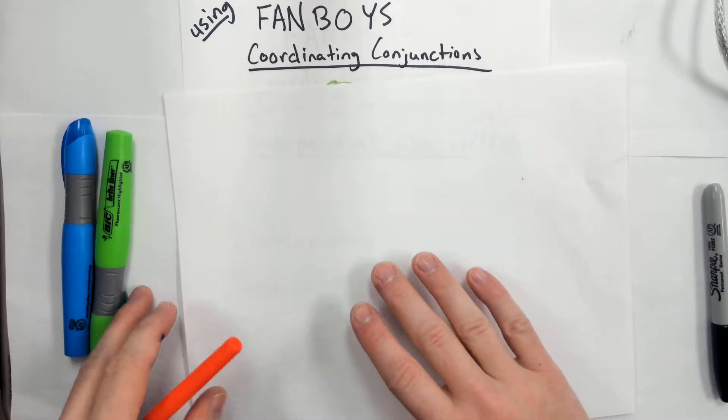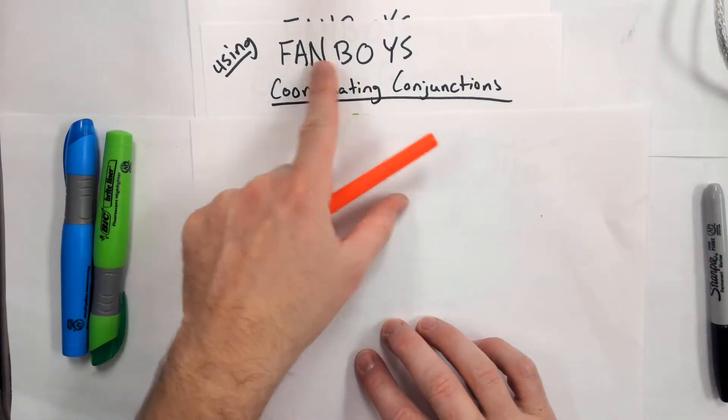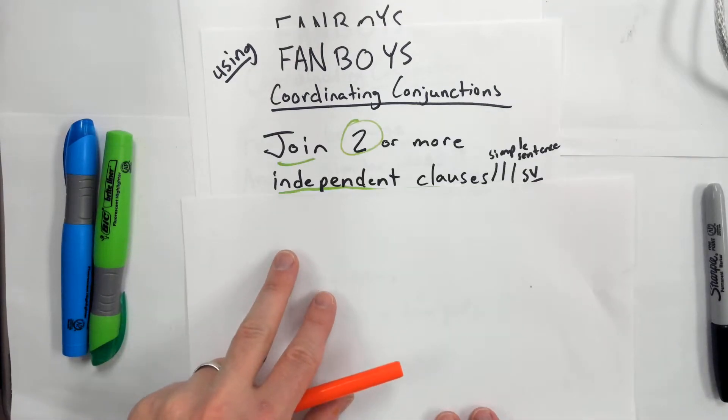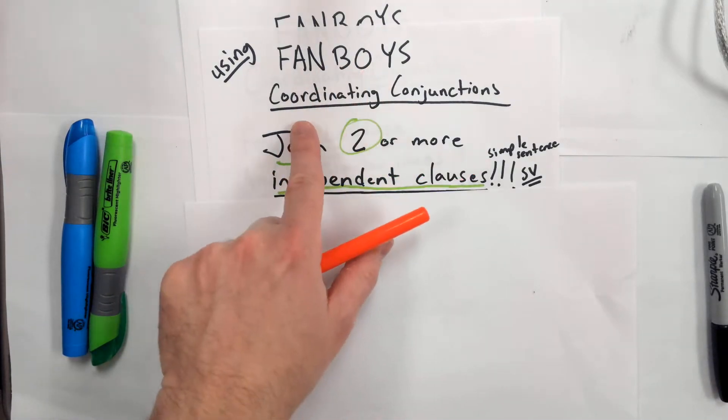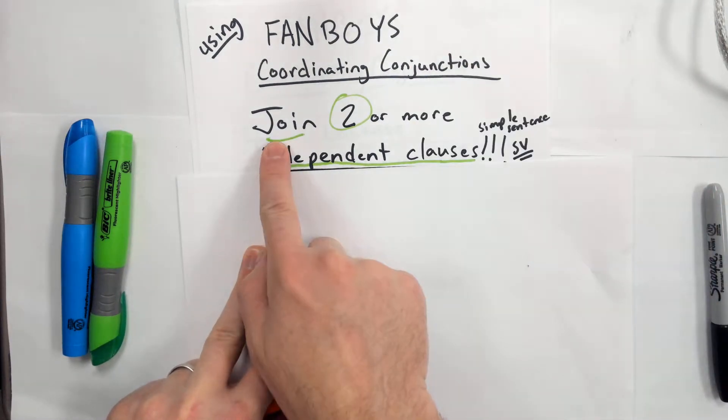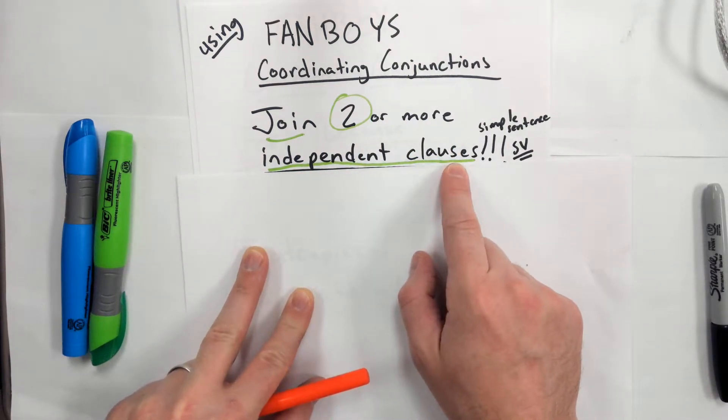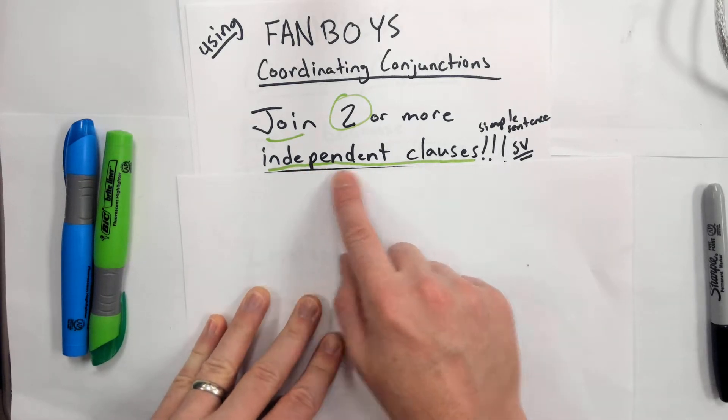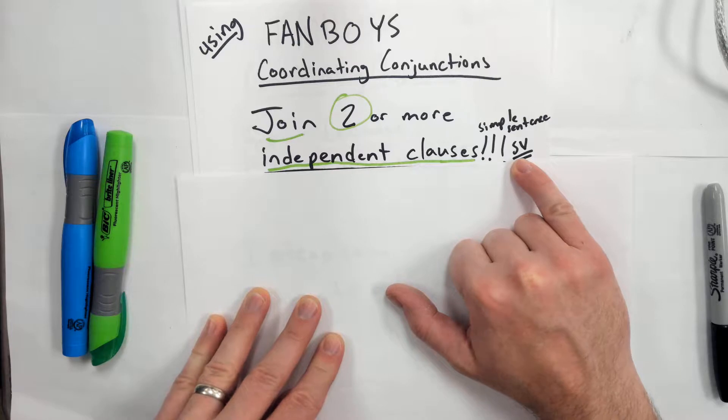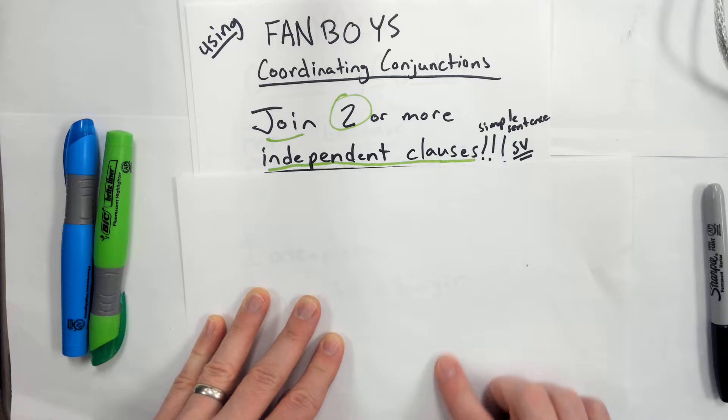This is a brief lesson on using coordinating conjunctions, or FANBOYS. Just to remind ourselves, FANBOYS or coordinating conjunctions join two or more independent clauses. An independent clause is a subject and a verb. At least it could be subject-subject-verb or subject-verb-verb, but it's a subject with a verb - a simple sentence.